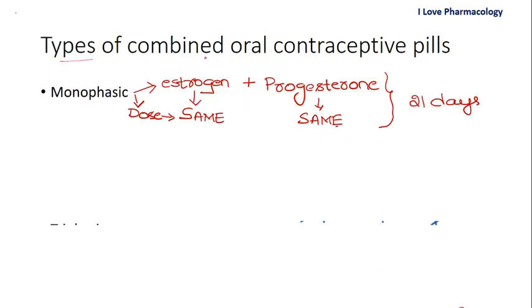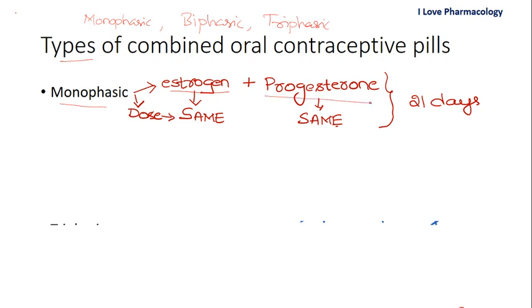There are three types of combined oral contraceptive pills: monophasic, biphasic, and triphasic. In monophasic pills, both the estrogen and progesterone doses remain the same for the whole 21 days of hormonal contraception.